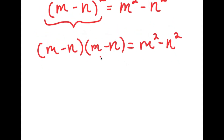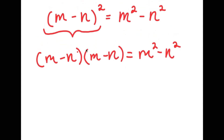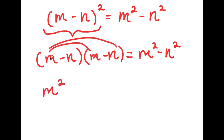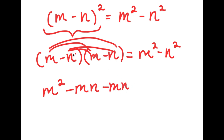From here, I'm going to expand this by multiplying these two. To multiply, I'm going to start by distributing the m. m times m is m squared, and m times negative n is negative mn. Now I'm going to distribute the negative n. Negative n times m is negative mn, and negative n times negative n is positive n squared.